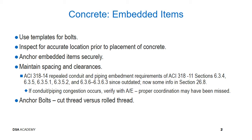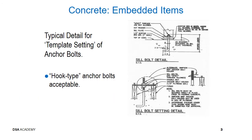Both need to be identified, tested if required, with correct length, protrusion above base plate, embedment, etc. Typical detail for template setting of anchors is shown on this slide. Project inspector must make sure the anchors are in the proper location relative to the thickness of the wall. Anchor spacing is per approved plans. The embedment depth is provided per plan, and protrusion above the concrete is sufficient for sill plate, washer, and nut.